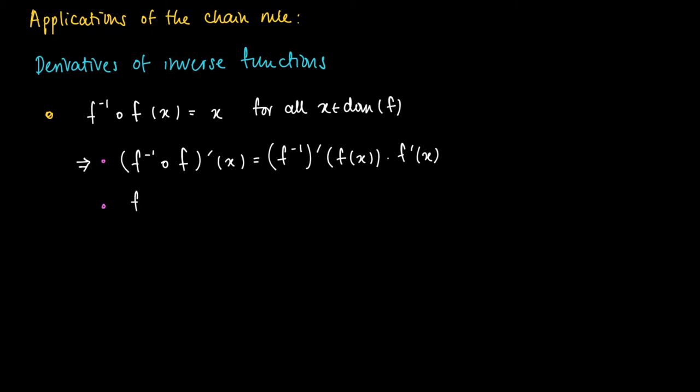And also we know since this is an identity that the composition of f^(-1) and f in x differentiated is no more than d/dx of x, which equals 1. So we see that the product of the respective derivatives equals 1. So that we see that the derivative of f equals 1 over the derivative of the inverse evaluated in f(x).